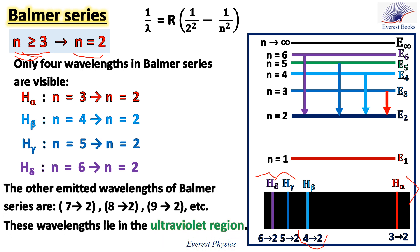The other emitted wavelengths of the Balmer series are from transitions 7→2, 8→2, 9→2, and so on. These wavelengths lie in the ultraviolet region, so the emitted photons are invisible.